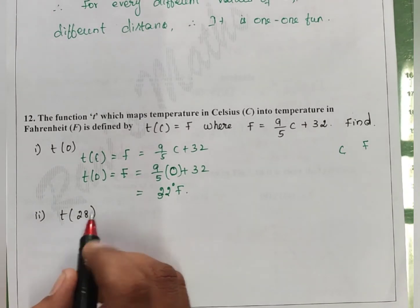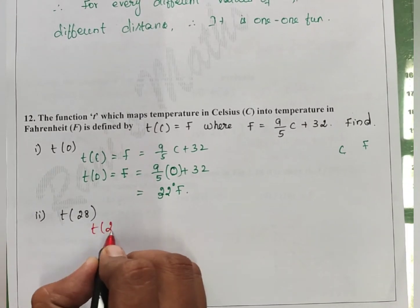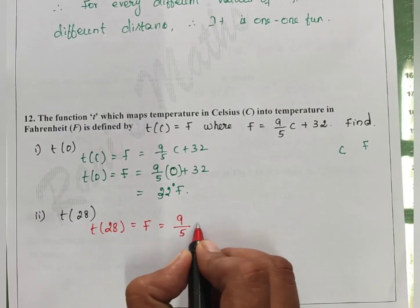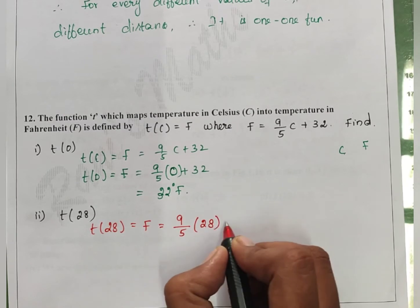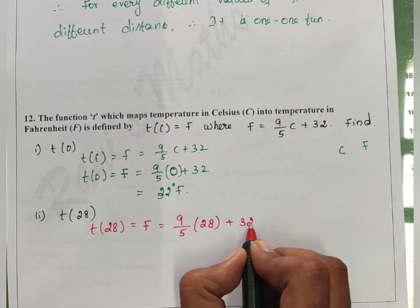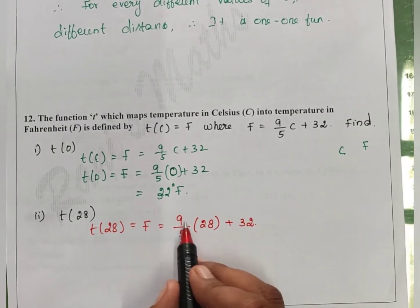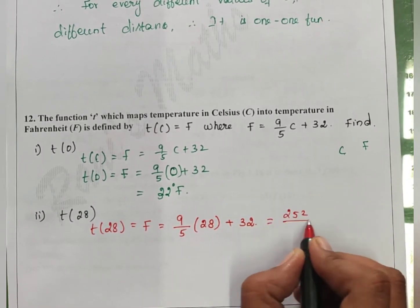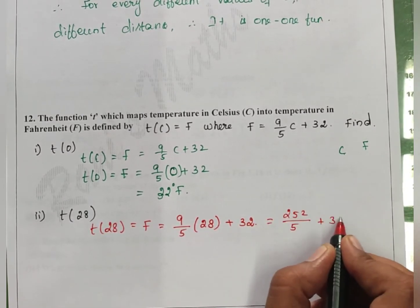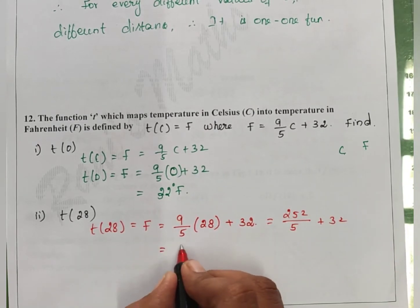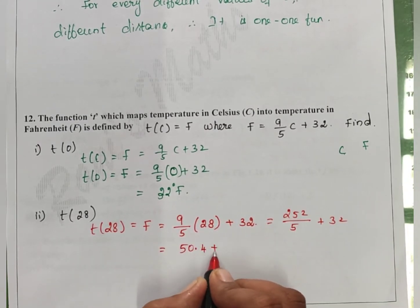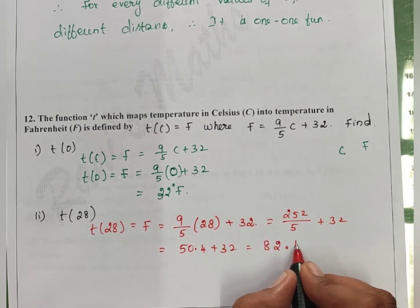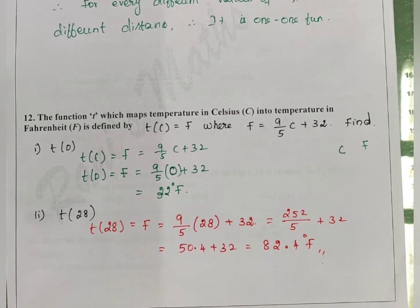Next, temperature in Celsius is 28. T(28) equals Fahrenheit equals 9 by 5 into 28 plus 32. If we multiply: 252 by 5 plus 32. This gives our answer.